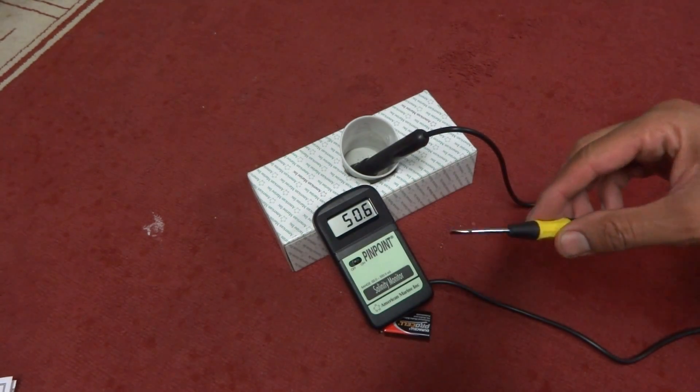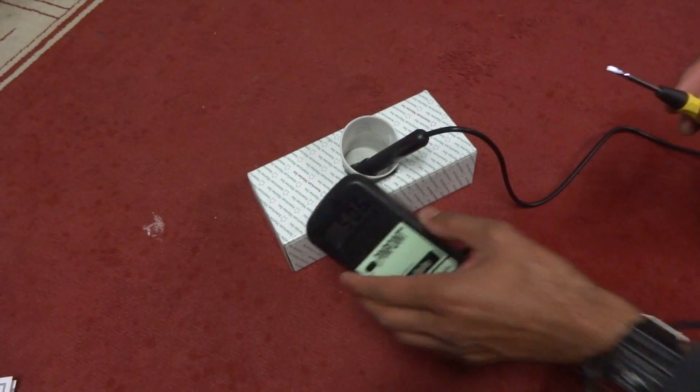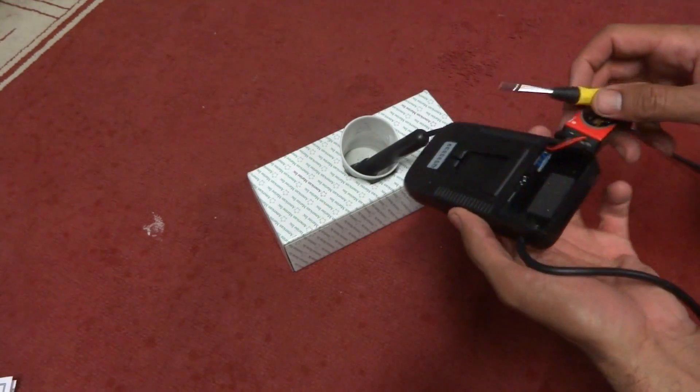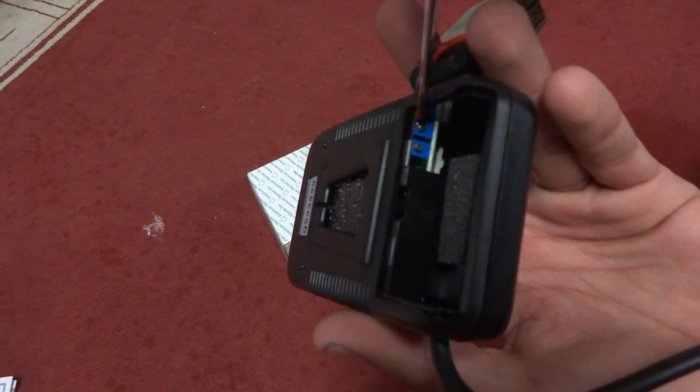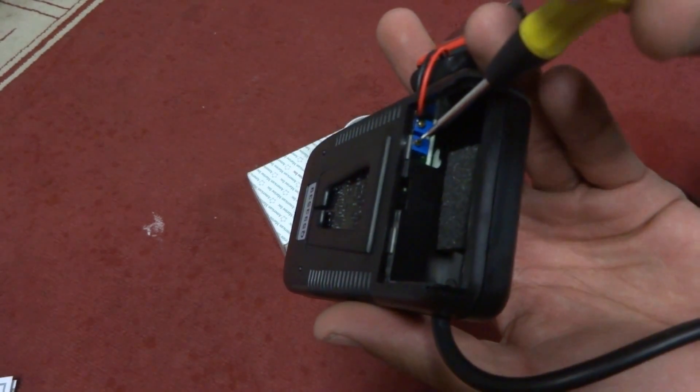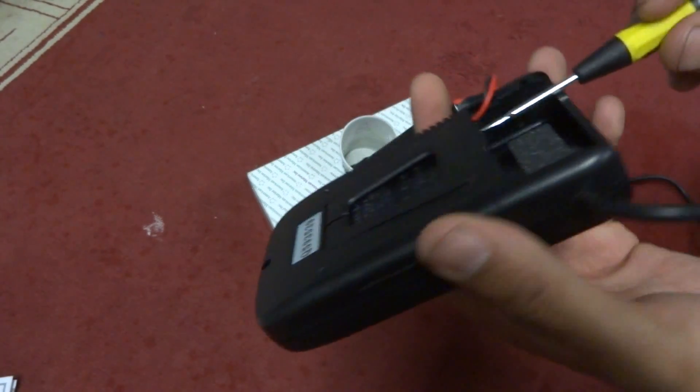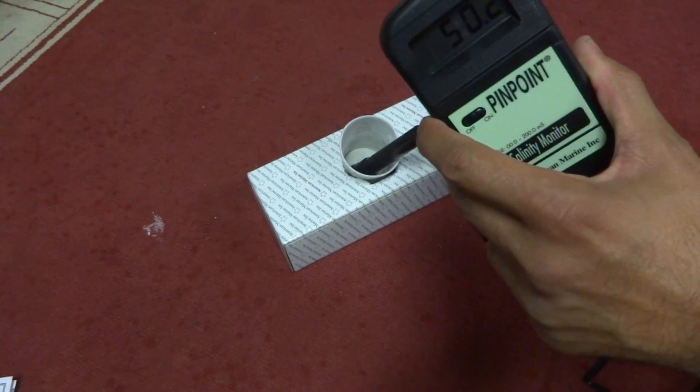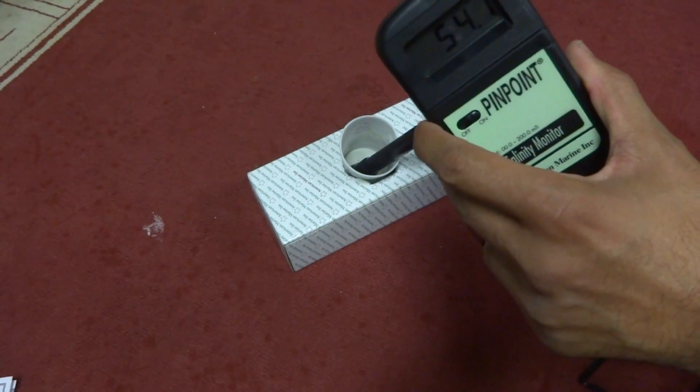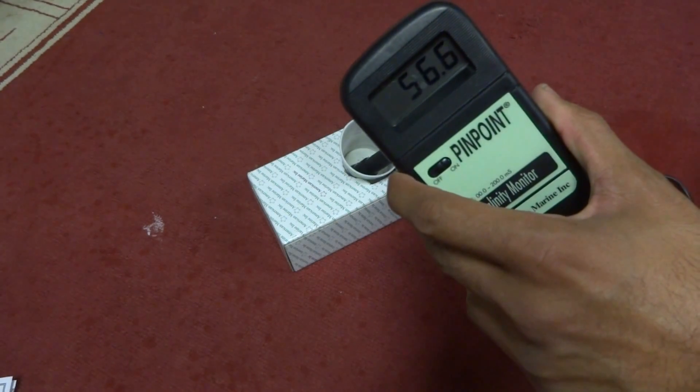So what you want to do is get your flathead screwdriver, turn the monitor over and you'll see two screws. One and two. What you want to do is get the innermost screw right here and then start to turn it until we get to 53. Make very small turns.